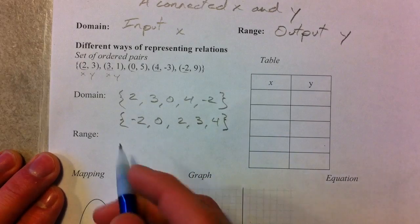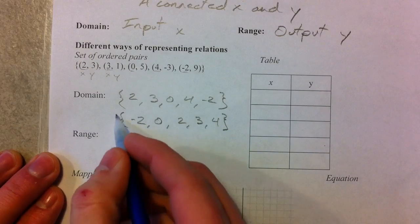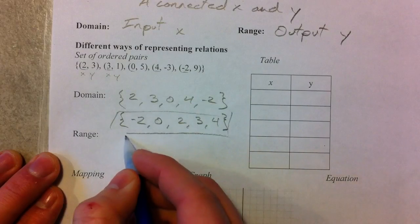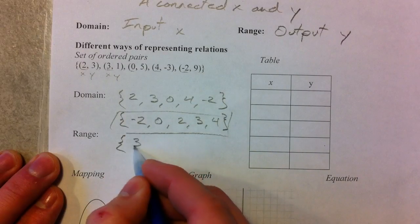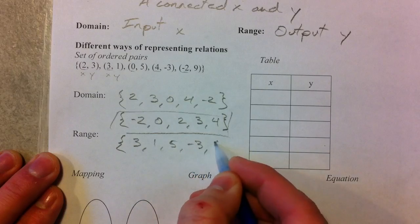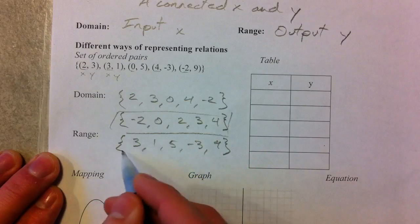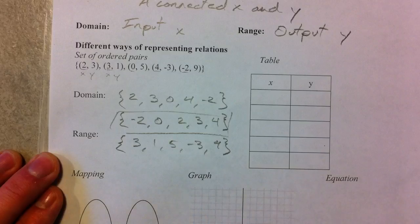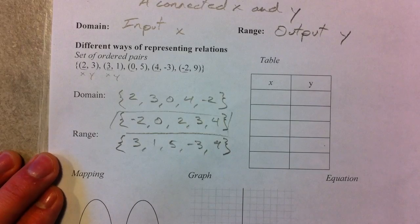Alright, and so the range values then are just the Y values, the outputs. So what do we get out? We get 3, 1, 5, negative 3, and 9. And same deal. Typically we rearrange those in numerical order.